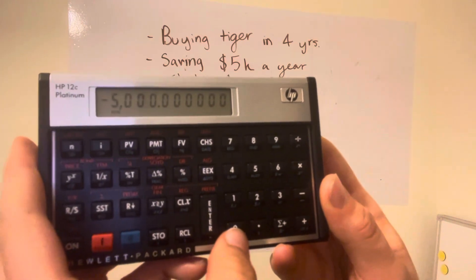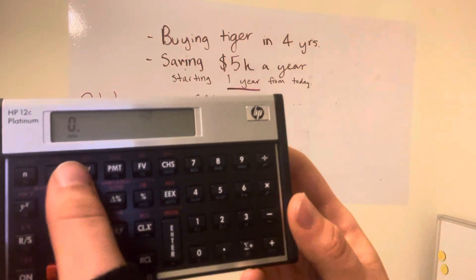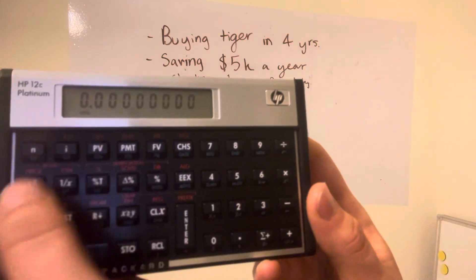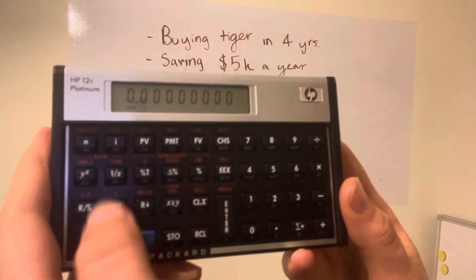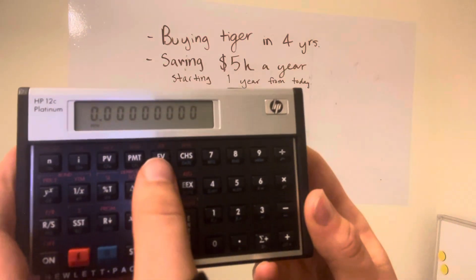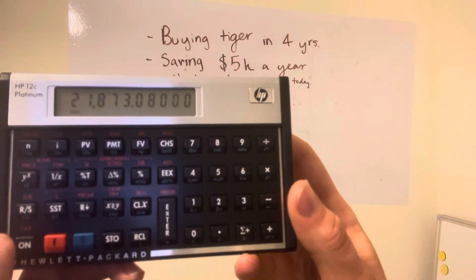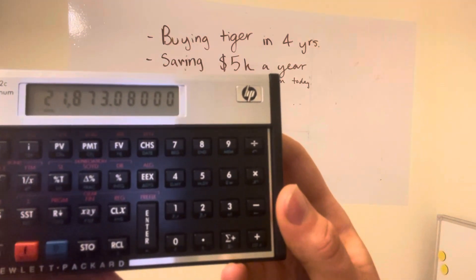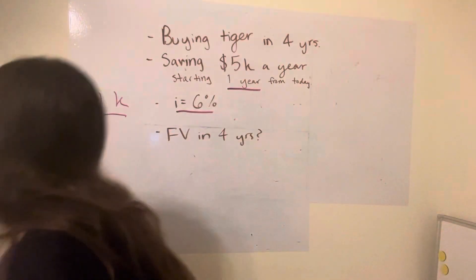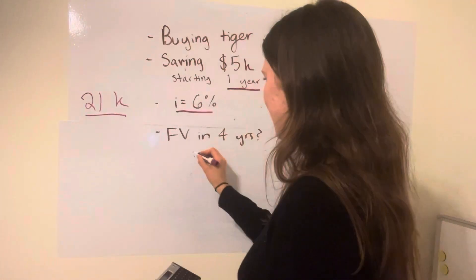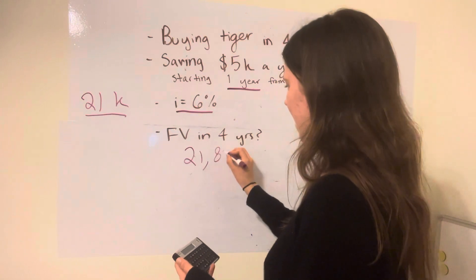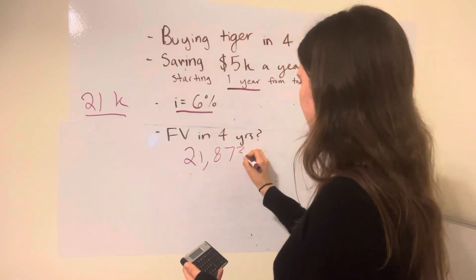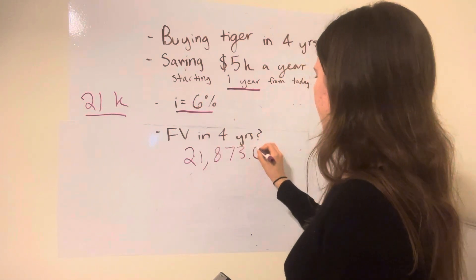I'm going to put zero for present value because I can't remember if I cleared it, but you don't need to put anything. And then our future value — nice, we can get the tiger! Our future value is going to be $21,873.08.